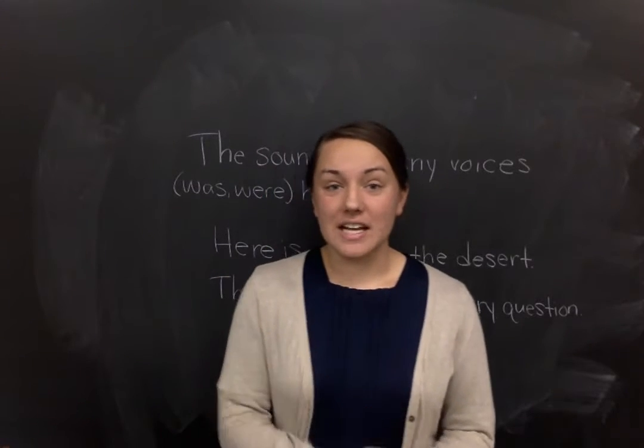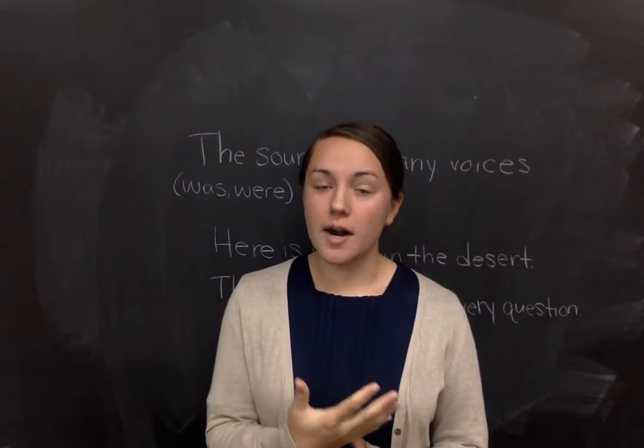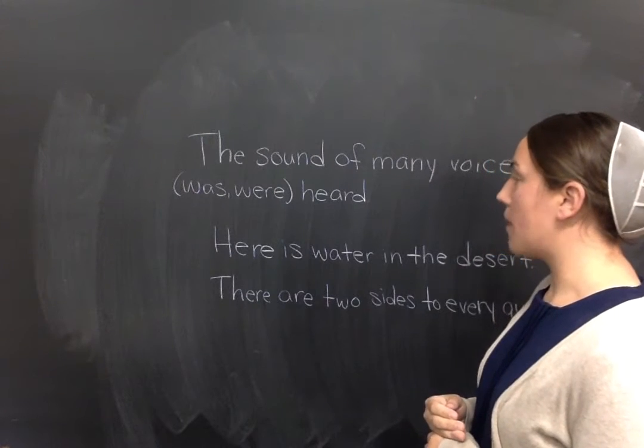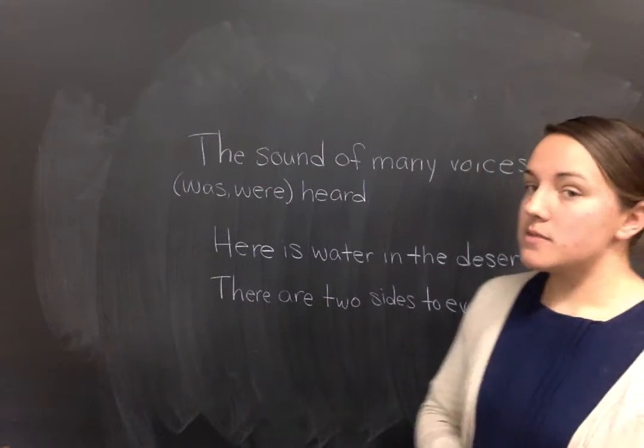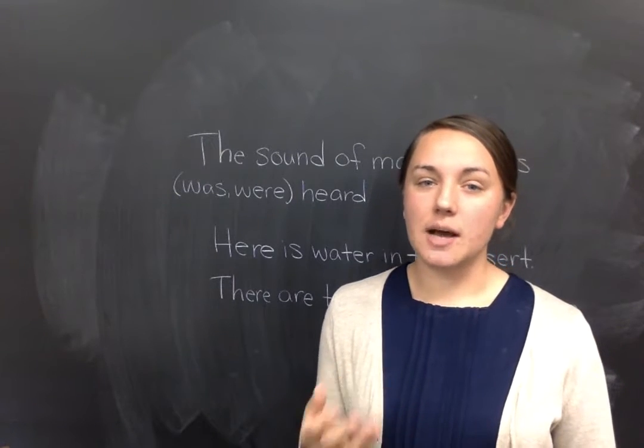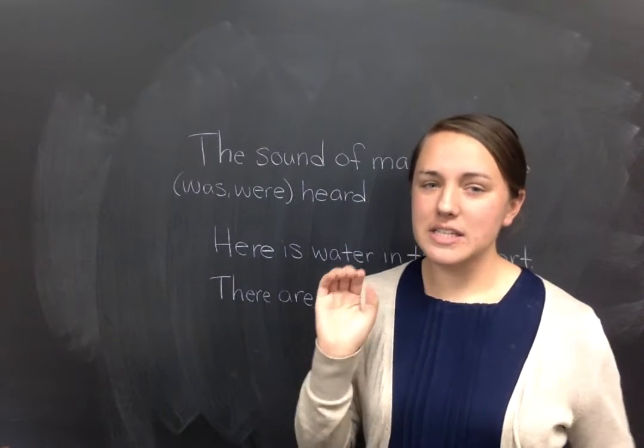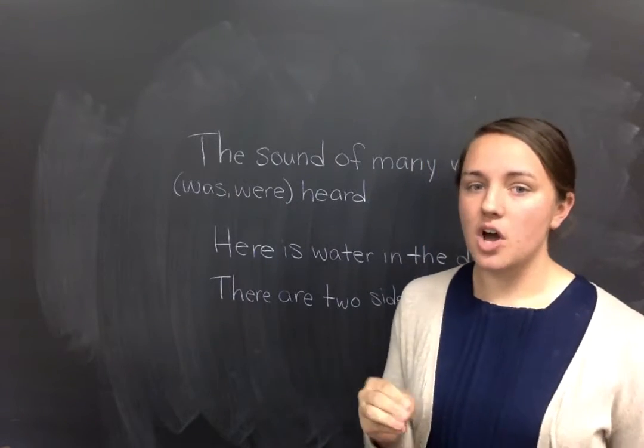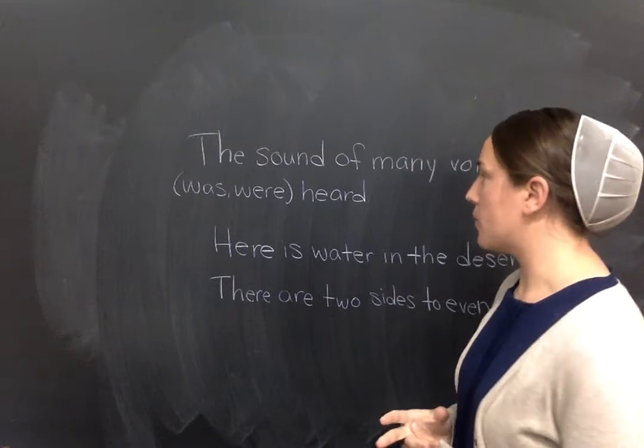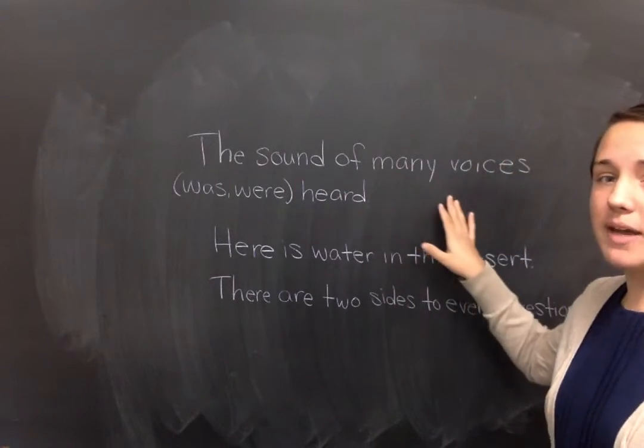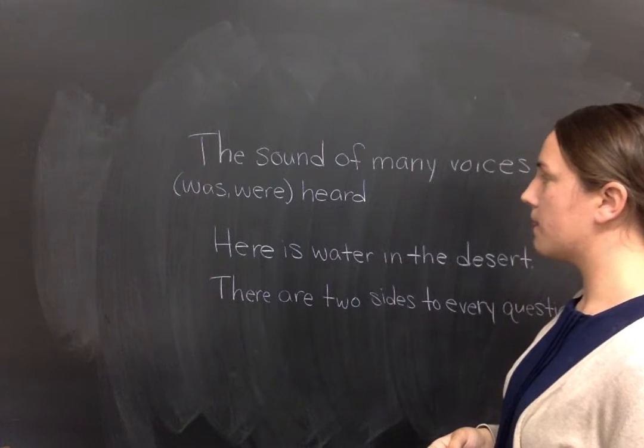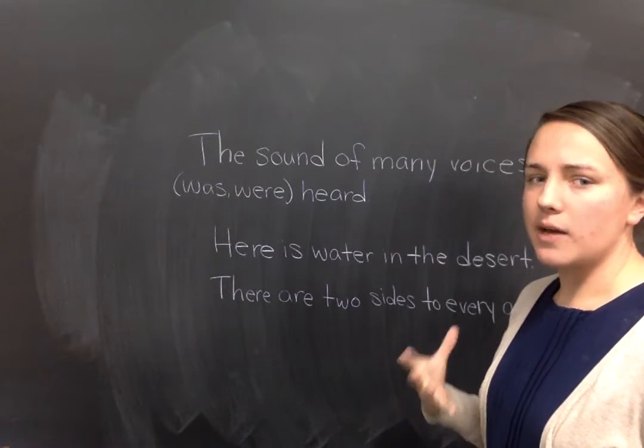So, in our lesson today, we're talking more about subject-verb agreement. But, something that we need to remember, sometimes we have a prepositional phrase in between our subject and our verb. And we need to be careful, because when that happens, our subject and verb still need to agree. For example, the sound of many voices was or were heard. So, what is our subject and what is our verb?